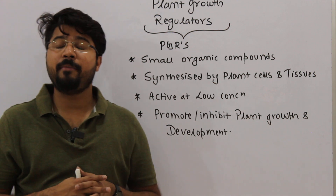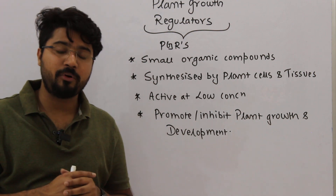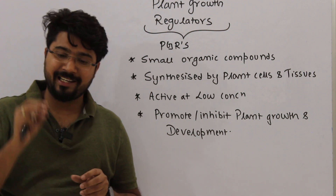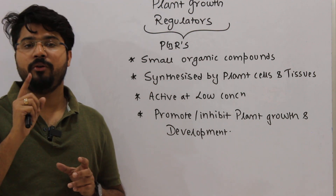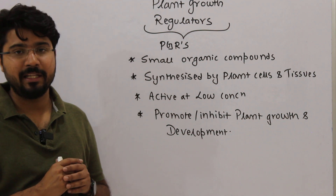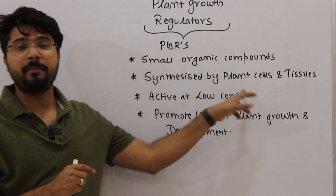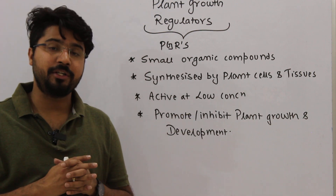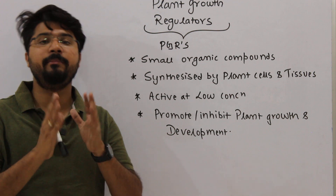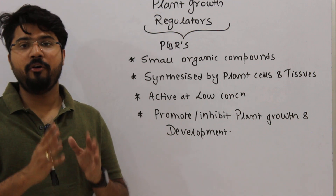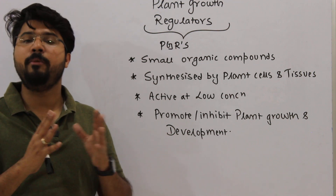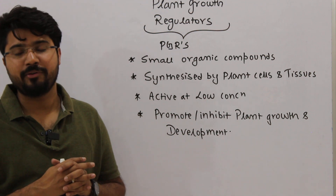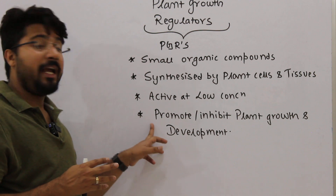PGRs are synthesized by plant cells and tissues — this is an important distinction. Compared to animal hormones, which are exclusively synthesized by glands, you cannot use the word 'gland' in the case of PGRs. The third property is that they are active at low concentration, which is similar to animal hormones — every hormone can bring about its action at a mere low concentration and does not need to be synthesized in higher concentrations.